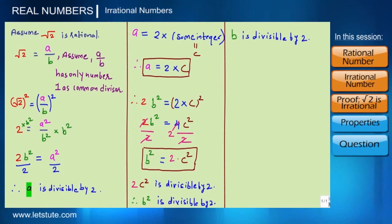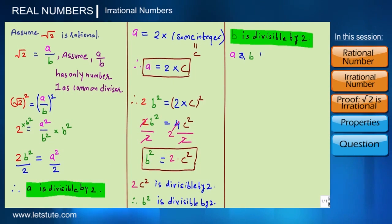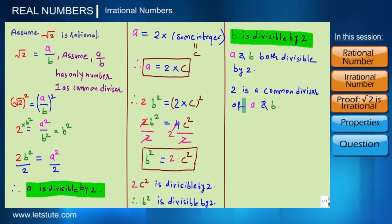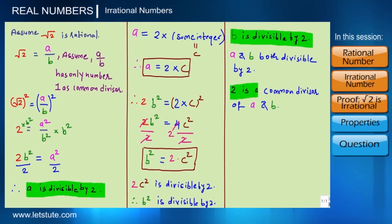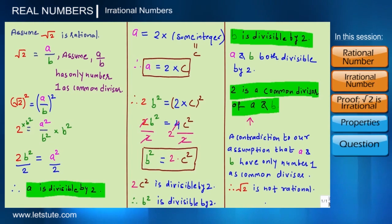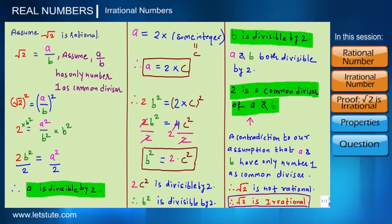Earlier we showed a is divisible by 2, and now we've proved b is also divisible by 2. Combining both statements: a and b are both divisible by 2, meaning 2 is a common divisor of a and b. But initially we assumed a and b have only 1 as a common divisor. Finding that 2 is also a common divisor is a contradiction to our assumption, and therefore root 2 is not a rational number — hence root 2 is an irrational number.